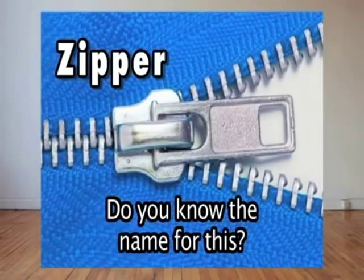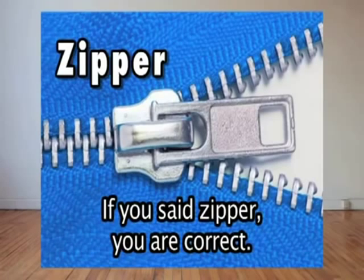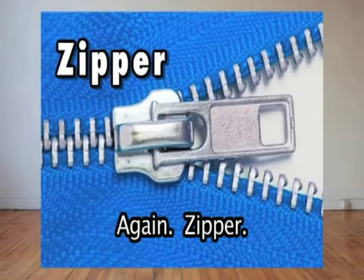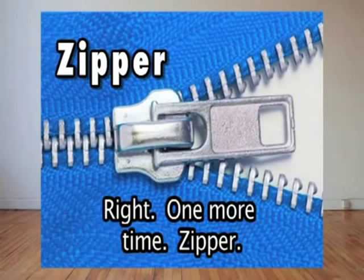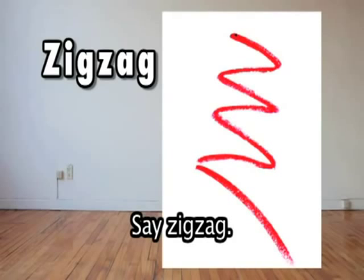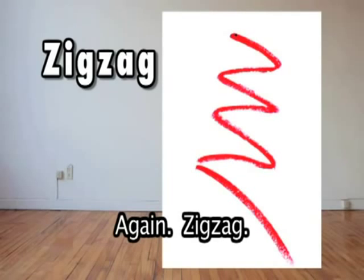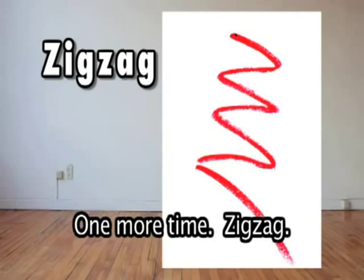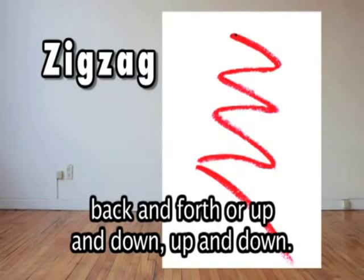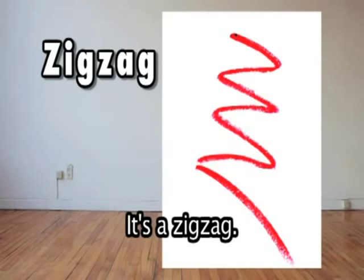Do you know the name for this? If you said zipper, you are correct. Say zipper. Again, zipper. Right, one more time, zipper. Zigzag — zig-zag. Say zigzag. Again, zigzag. One more time, zigzag. Yes, a zigzag is a pattern that goes back and forth, or up and down. It's a zigzag.